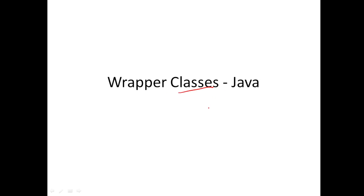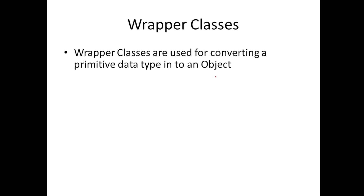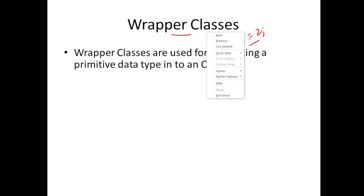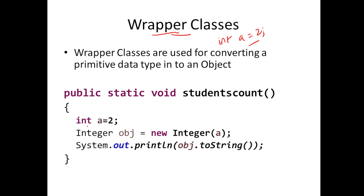Let's see what wrapper classes are in Java. The use of a wrapper class is very simple. Say you have an integer primitive data type: 'int a = 2'. This is a primitive data type, not an object. You can use a wrapper class to convert a primitive data type like this to an object — not only an integer, but any primitive data type. Primitive data types include float, long, short, byte, and boolean. You can't invoke methods on a primitive data type.